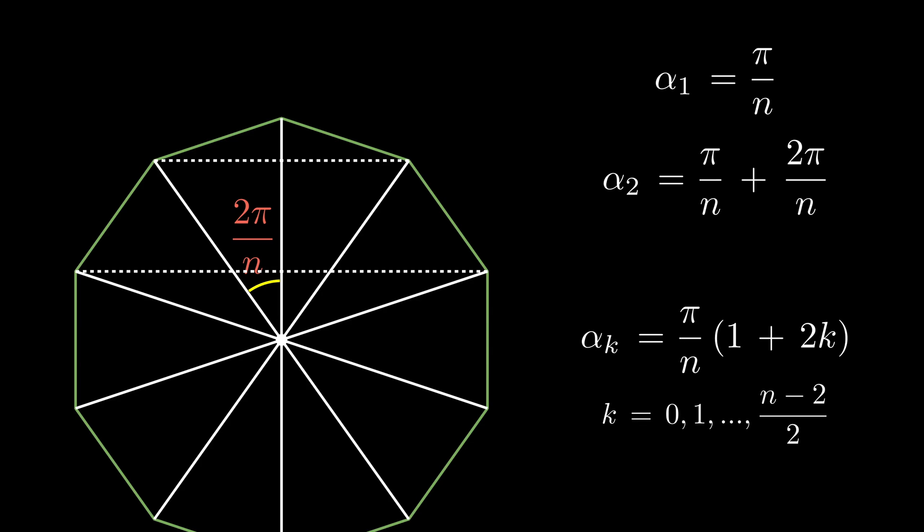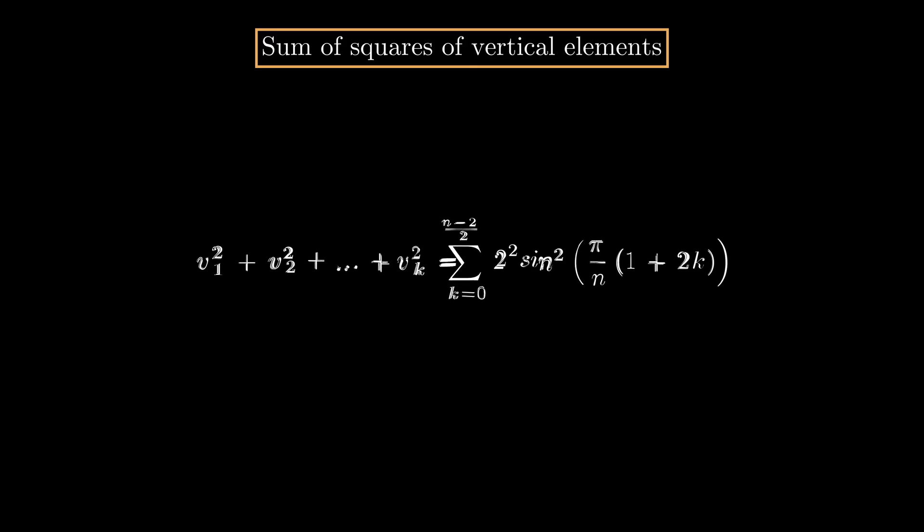It's not hard to make up a general formula. K runs between 0 and half n minus 2. Now, the sum we want to calculate looks like this, and it's not exactly trivial.